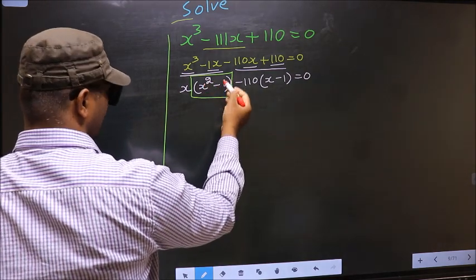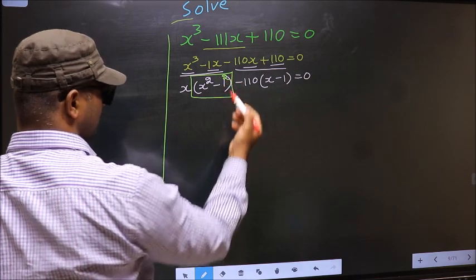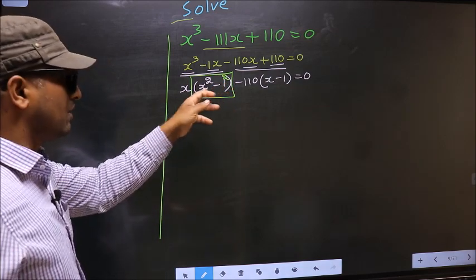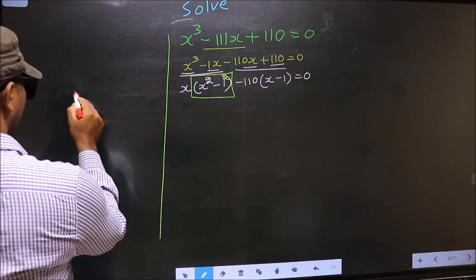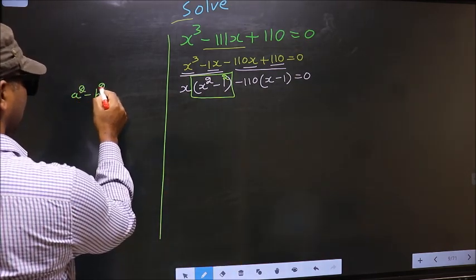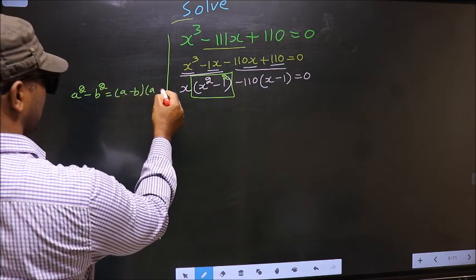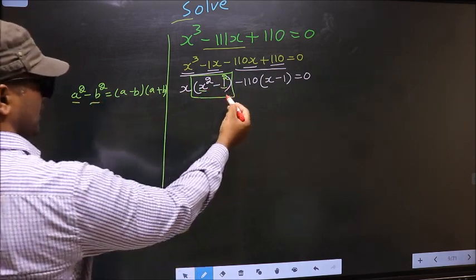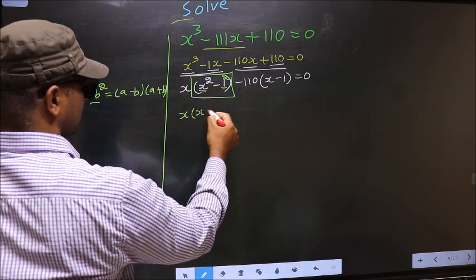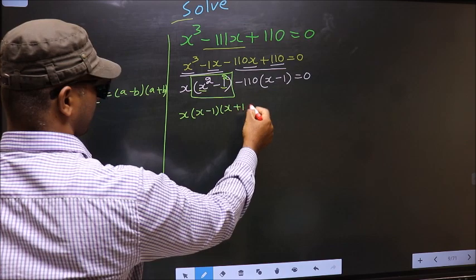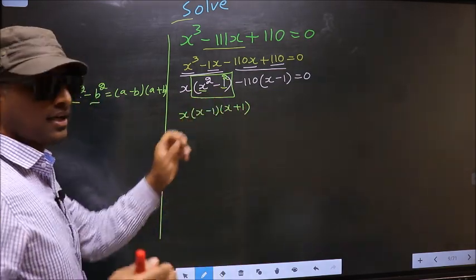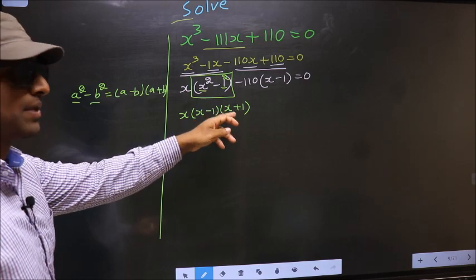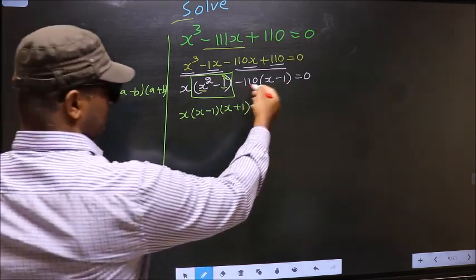Now observe this — we have x² - 1, which is a negative symbol with a square on x. I put a square on 1 as well; it makes no difference. Now we can apply the formula a² - b² = (a - b)(a + b). In place of a we have x, in place of b we have 1, so we get (x - 1)(x + 1).